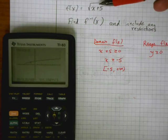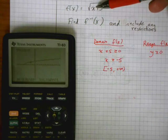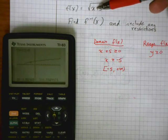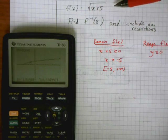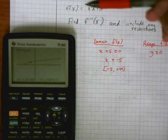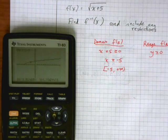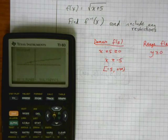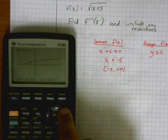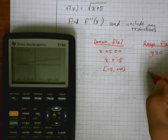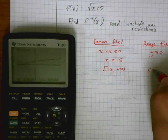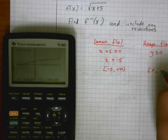If I start out at negative 5, the values keep increasing — f of x is always going to keep on increasing, the y value is going to keep on increasing. So the range is from 0 to positive infinity.